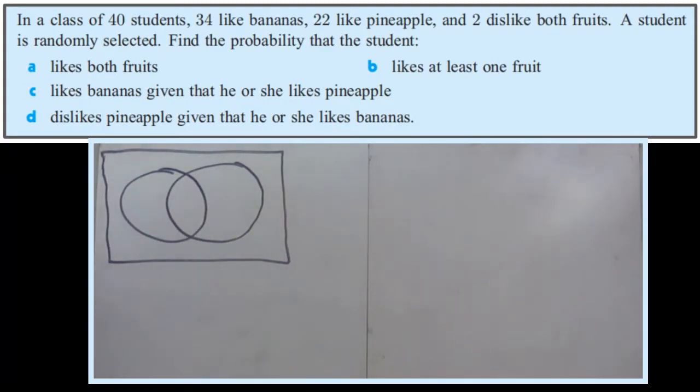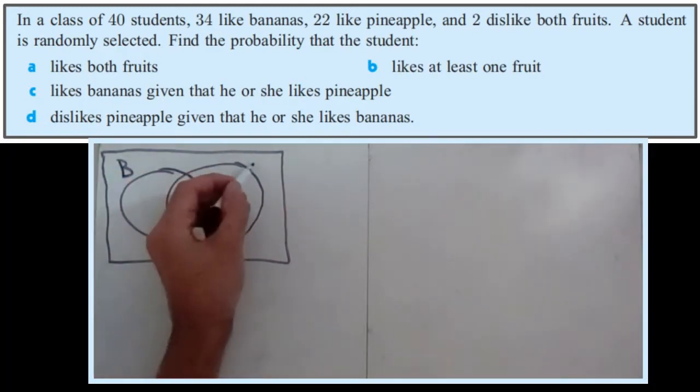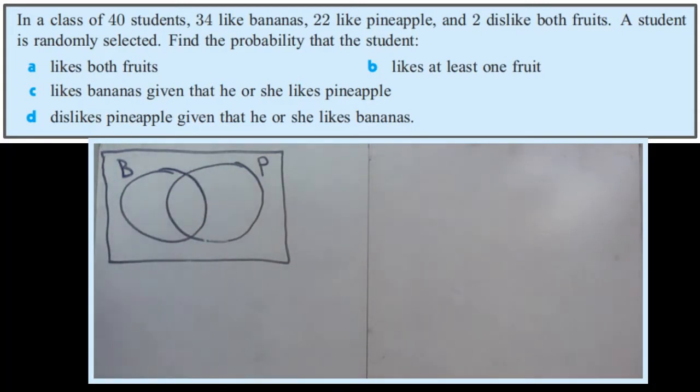The universe being the 40 students in the class. So this can be B for bananas, this can be P for pineapples, and then we start filling in.